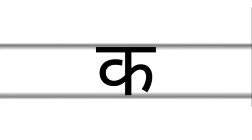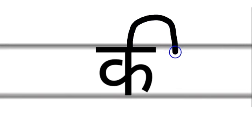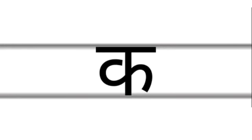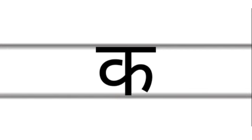Next letter: Kī. Add a semicircle below the consonant as shown here. First, you add a hook on the consonant as shown here. What is this letter, children? Ku.